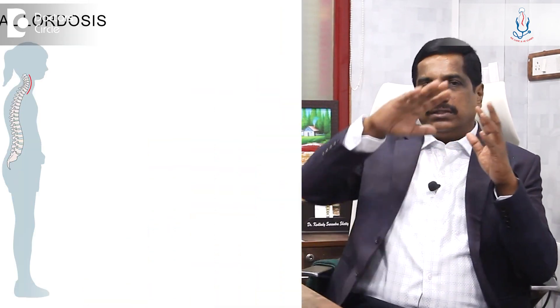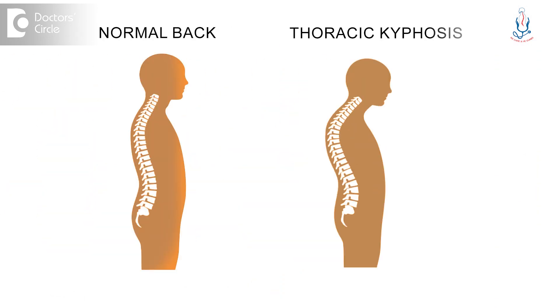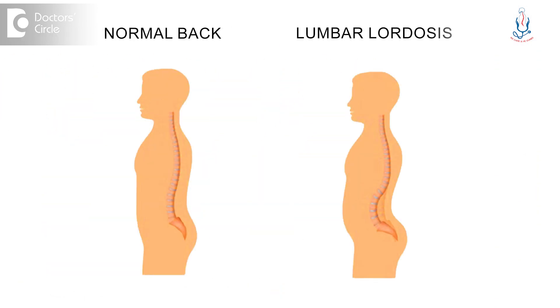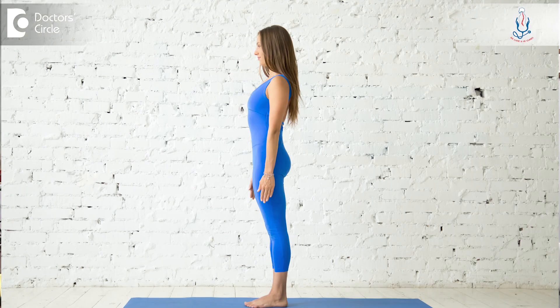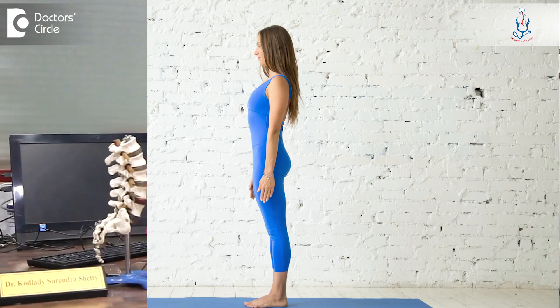This alternation in curvature — cervical lordosis, thoracic kyphosis, and lumbar lordosis — helps in keeping our head straight over the pelvis.